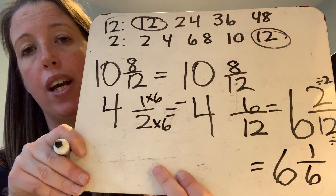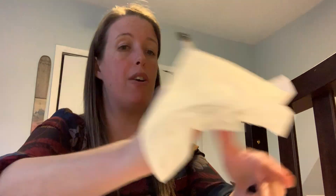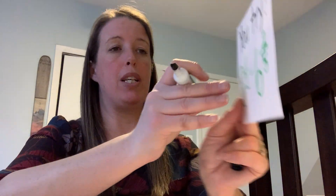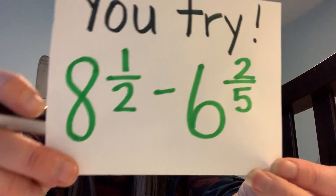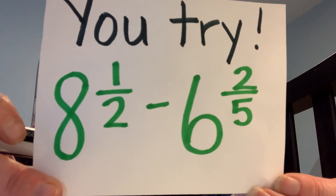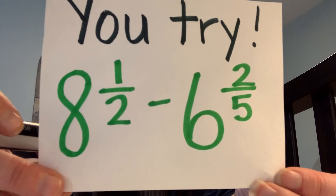That's my final answer. Now it's going to be your turn for a subtraction one. Take your time with this. Look for your common denominator — whatever you do to your denominator, you must do to your numerator. Here we go: eight and a half minus six and two-fifths.